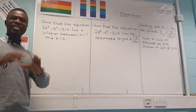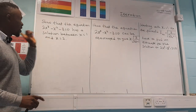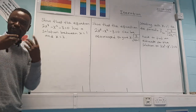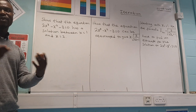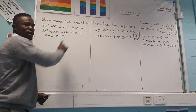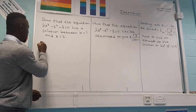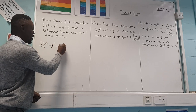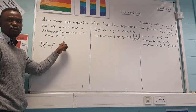If you get two answers where one is positive and one is negative, then it has a solution. But if they are the same sign, then it does not have a solution. In this case they say the solution is between x = 1 and x = 2, so we need to substitute those x values one by one into the original equation: 2x³ − x² − 3 = 0.